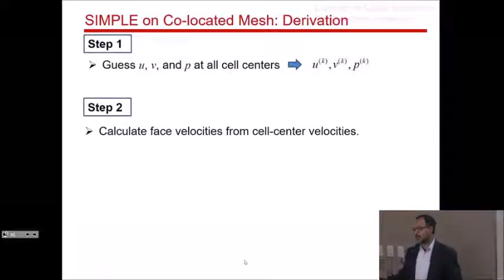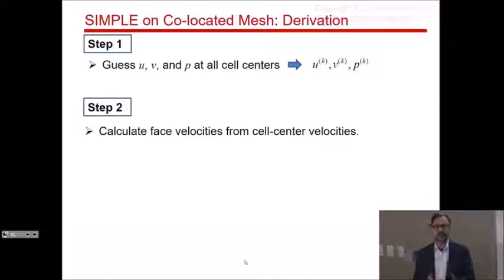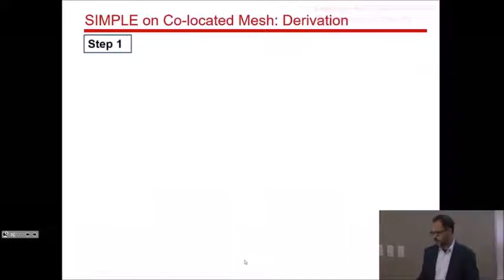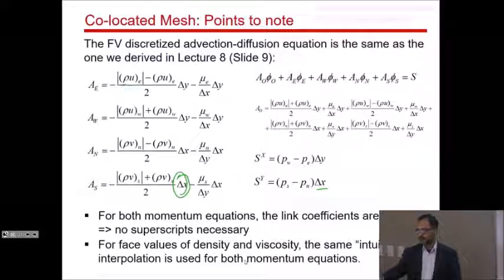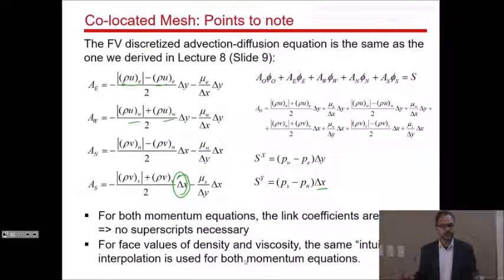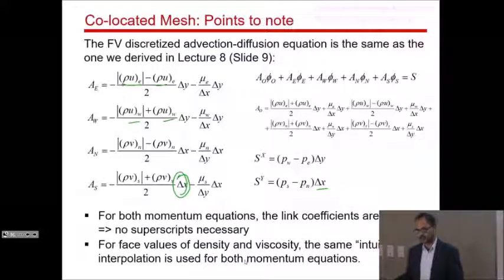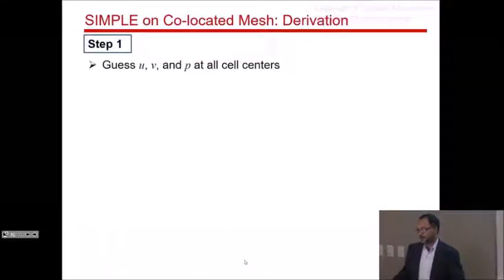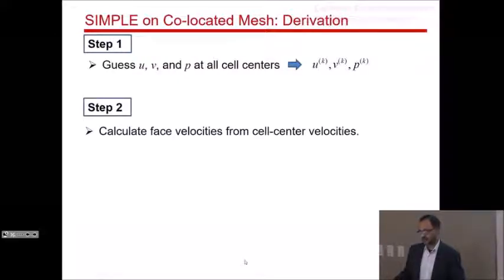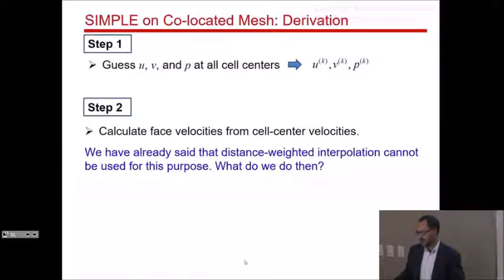Step two: calculate face velocities from cell center velocities. Face velocities are needed to calculate link coefficients. We have already said that distance-weighted interpolation cannot be used for this purpose — so what do we do?